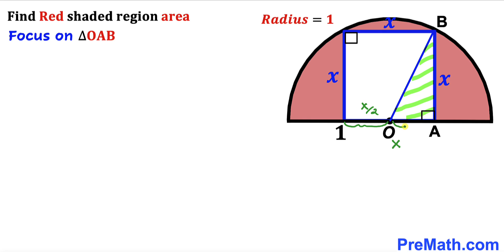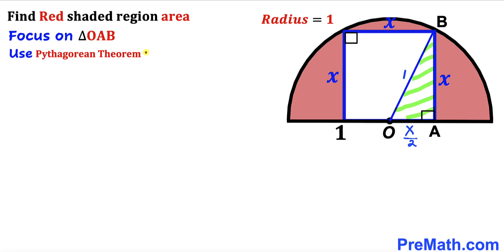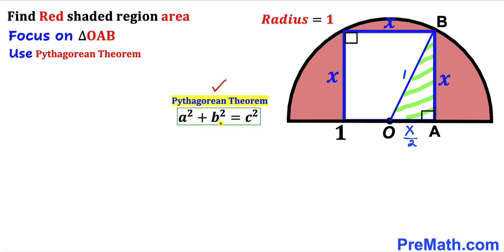So this segment is going to be X divided by 2, and the other segment OA is going to be X divided by 2 as well. Moreover, OB is the radius of this semicircle and we know the radius is 1, so the OB length is going to be 1 unit. Now we are going to apply the Pythagorean theorem on this triangle, whose side lengths are X, X/2, and hypotenuse OB equal to 1.